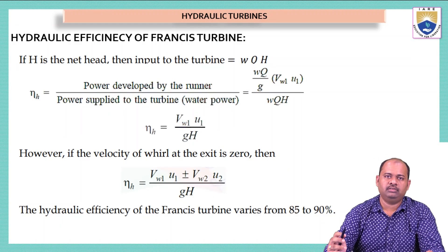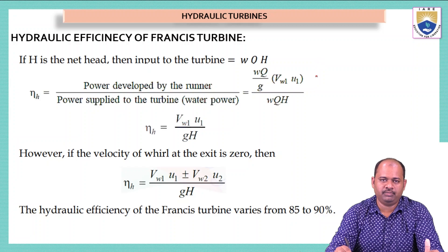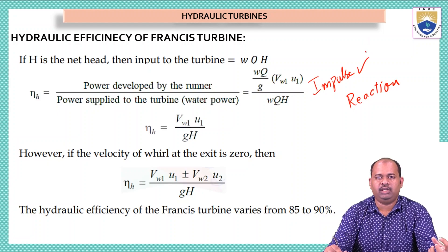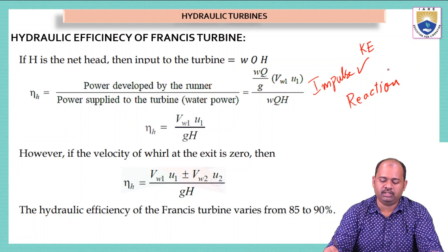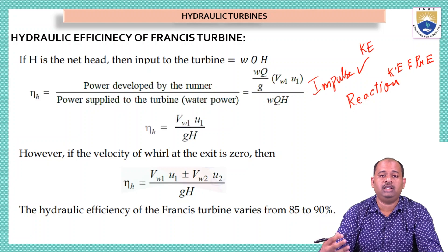In the previous lecture we have seen different types of turbines and their classification. From that we have two main types: impulse and reaction turbines. In impulse turbines the pressure available at the inlet is only kinetic energy, whereas in reaction turbines we have both kinetic energy and pressure energy available at the inlet of the turbine.